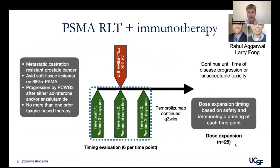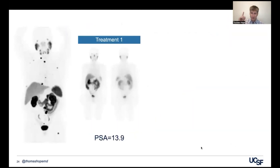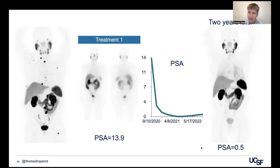One trial I want to highlight is a UCSF trial combining PSMA radioligand therapy with immunotherapy, where Rahul Aggarwal is principal investigator with Larry Fong. This looks at whether a single dose of PSMA radioligand therapy followed by pembrolizumab can prolong response. Here's an example of a patient on the trial with low-volume but very PSMA-avid disease. After only one dose of PSMA radioligand therapy, his PSA was 13.9 at baseline but achieved a near-complete response and is just starting to creep back up. Two years out, his PSA was 0.5 with no evidence of PSMA-positive disease — obviously not normal, and we're very optimistic.